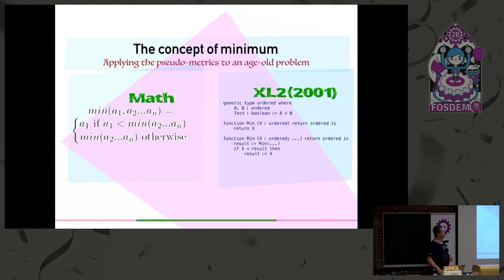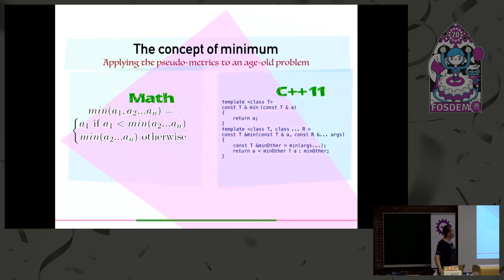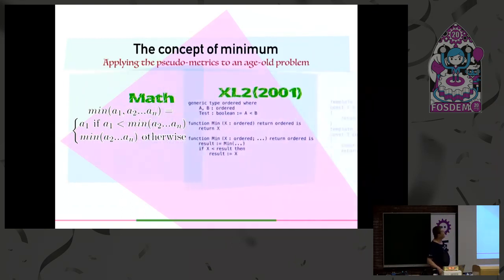I've been writing languages inspired by this since the late 1990s, and in 2001 one of my compilers could actually compile that stuff. What this says is that a type is ordered if it has a less than that returns a boolean, and the min of one ordered entity is that value, the min of one ordered and other stuff is you do the min of the rest. This looks much more like what you have on the left, right? But there's still a bit of extra noise, but I'm still very happy with this one.